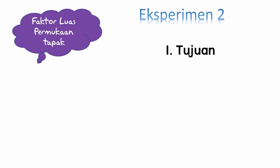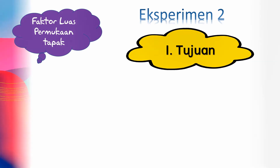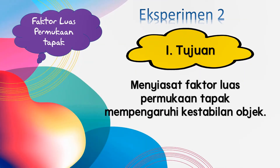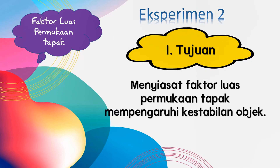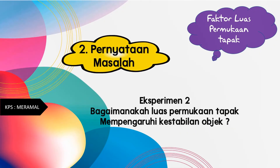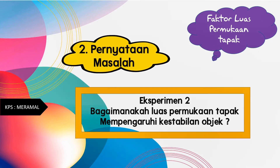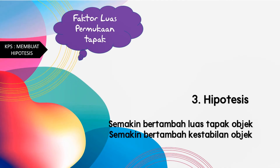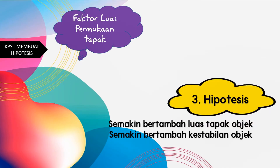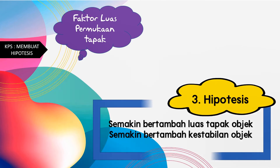Sekarang kita akan beralih kepada eksperimen kedua, iaitu tentang faktor luas permukaan tapak. Tujuannya adalah untuk menyiasat faktor luas permukaan tapak yang mempengaruhi kestabilan objek. Penyataan masalahnya adalah bagaimanakah luas permukaan tapak mempengaruhi kestabilan objek? Kemahiran proses sainsnya adalah meramal. Hipotesis adalah semakin bertambah luas tapak objek, semakin bertambah kestabilan objek.